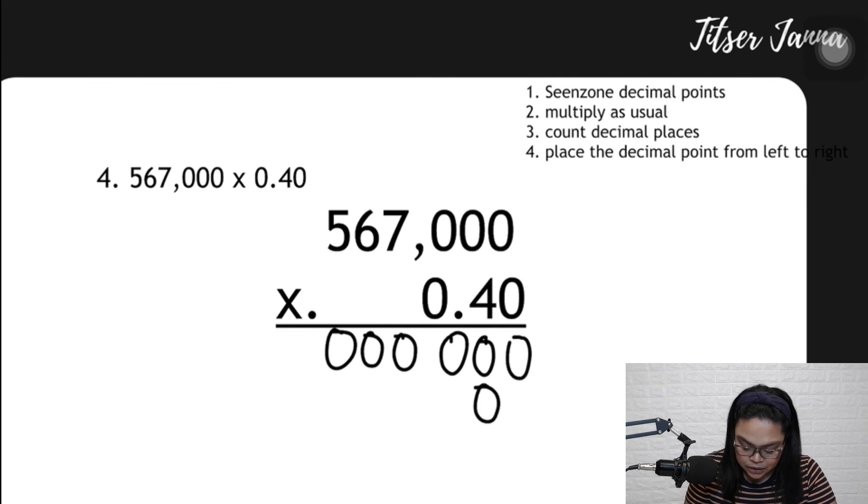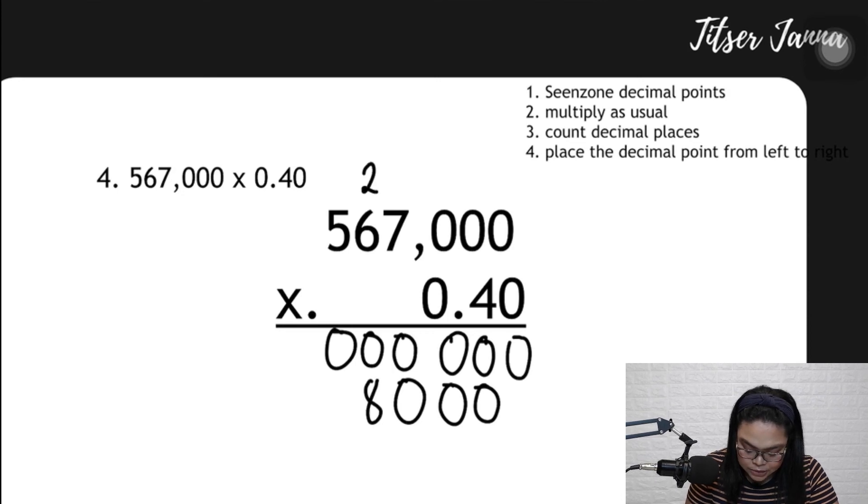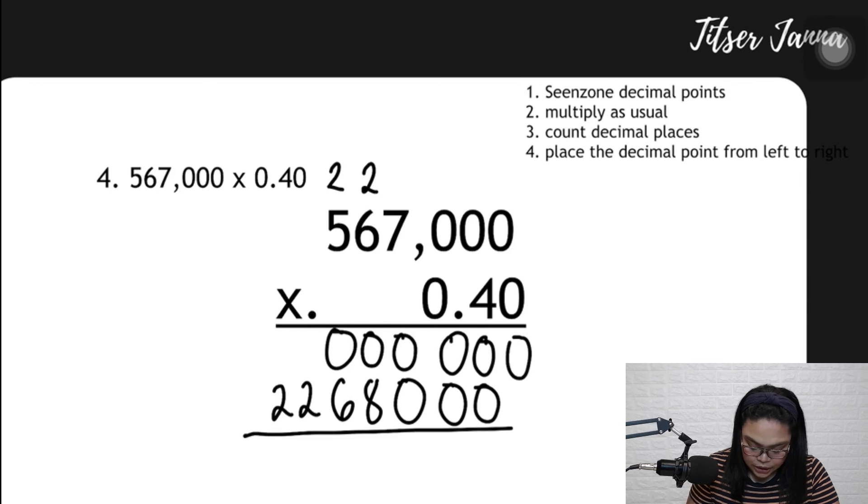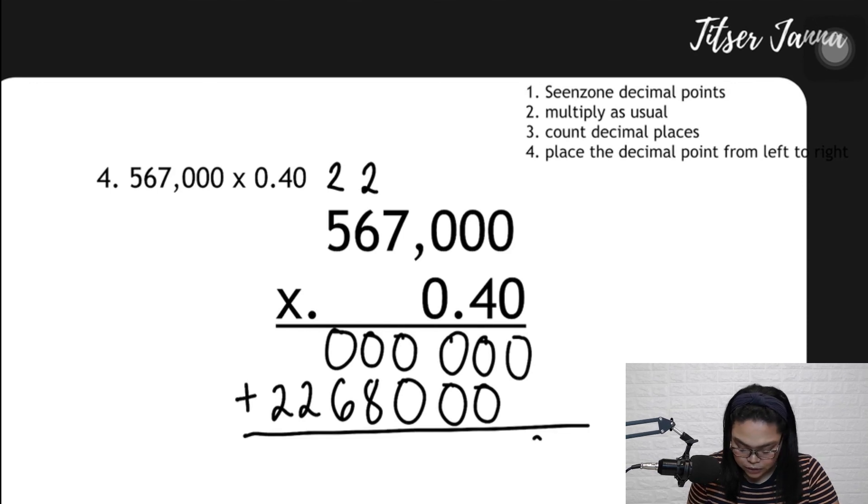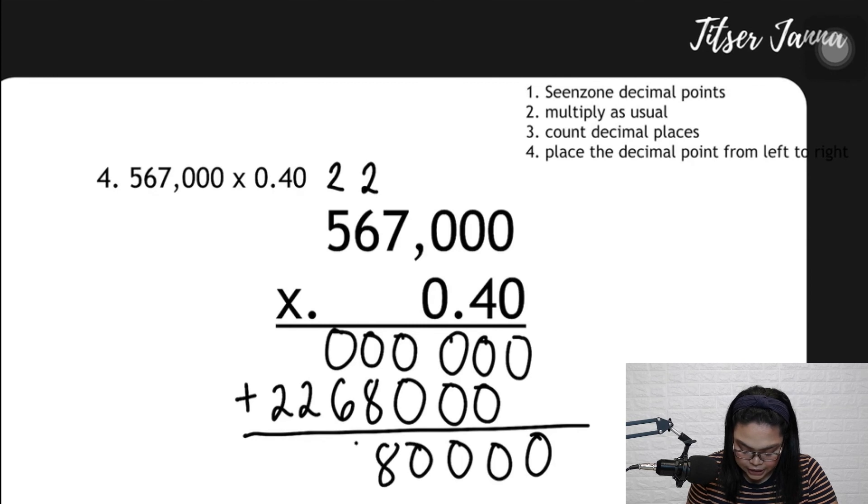4 times 0, 0, 0, and 0. 4 times 7, that is 28. 6 times 4 is 24, plus 2 is 26. 5 times 4 is 20, plus 2 is 22. And we add all those up. 0, 0, 0, 0, 8, 6, 2, 2.